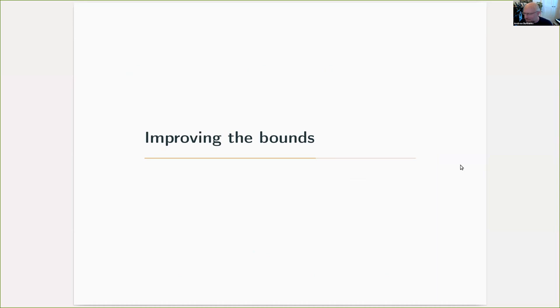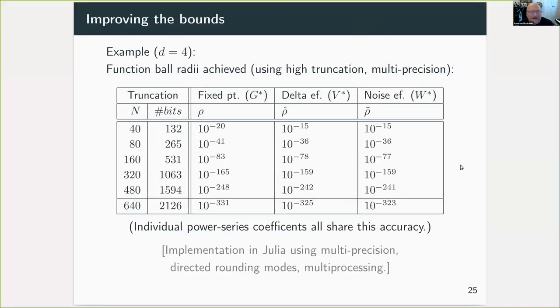So initially our concerns were simply to get bounds on these objects, but in fact, with a bit more work and by moving to a high performance language—in this case, we used Julia, which is a fairly new high performance language—one is able to improve these bounds significantly. So we're going to much higher truncation degree and using multi-precision, we're able to go up to degree 640 in our symmetric representation. That's degree around 2500 for the original function. And we're able to bound the fixed point within a function ball of radius 10 to the minus 331, for example. And because this is an L1 bound, it's the sum of all of the absolute errors, then every single power series coefficient is at least that accurate. So this was a very satisfying thing to do, and we gain similar bounds on the delta eigenfunction and the noise eigenfunction.